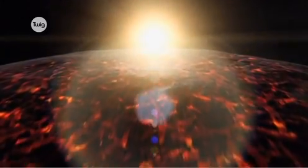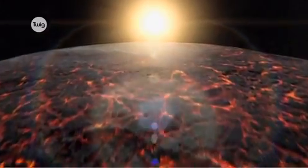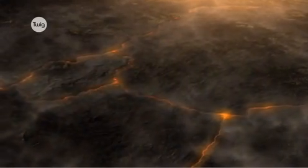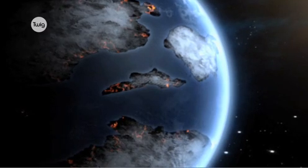The tectonic plates formed when the Earth's outer crust solidified, more than 4 billion years ago, not long after the planet was formed. And they've been constantly on the move since.